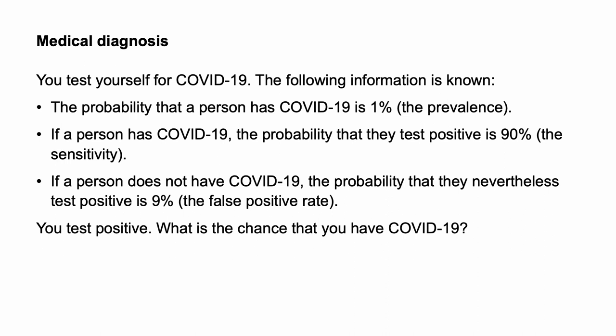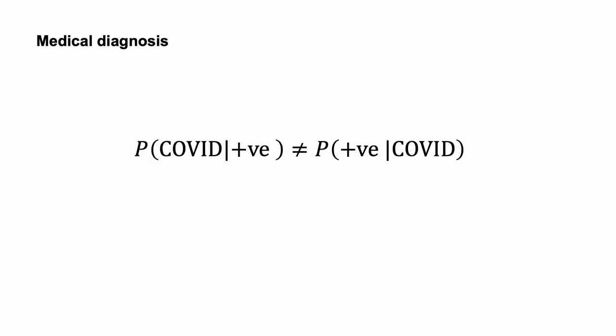When problems of this nature are given to physicians, around 10 to 20% reason using Bayes' rule — for example, see Hofraj et al., 2015. The most common answers approximate the sensitivity, 90% for this example. As for the cab problem, there is confusion between the conditional probabilities. The probability of having COVID-19 given they have tested positive does not equal the probability of testing positive given they have COVID-19. One hypothesis for this error is that a positive test is representative of someone with COVID-19. As a result, the test is given greater weight than the more general information about the base rate.